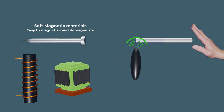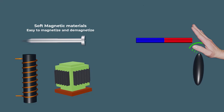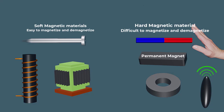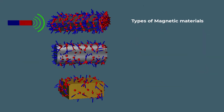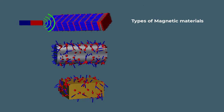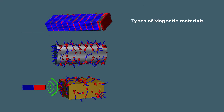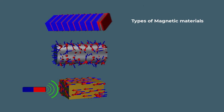Soft magnetic materials are suitable for making the core of a transformer. Materials which are difficult to magnetize and demagnetize are called hard magnetic materials. Such materials are suitable for making permanent magnets.